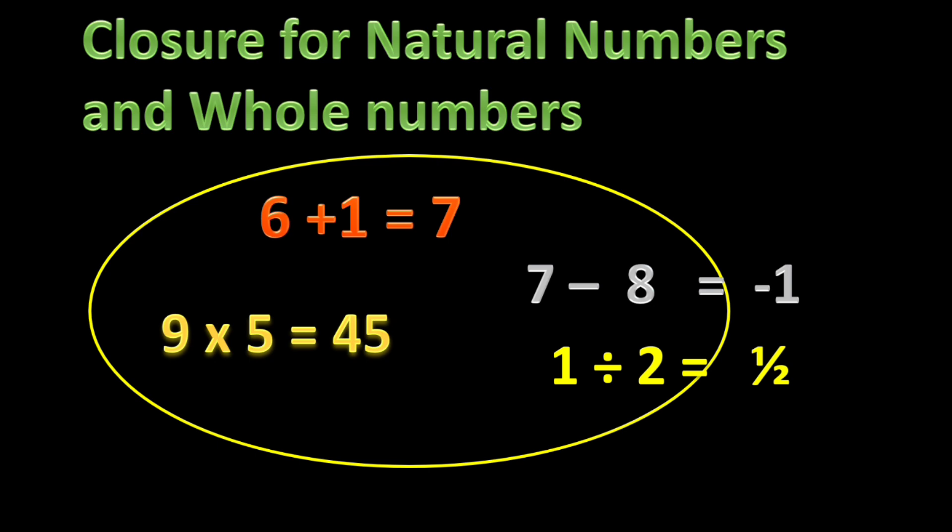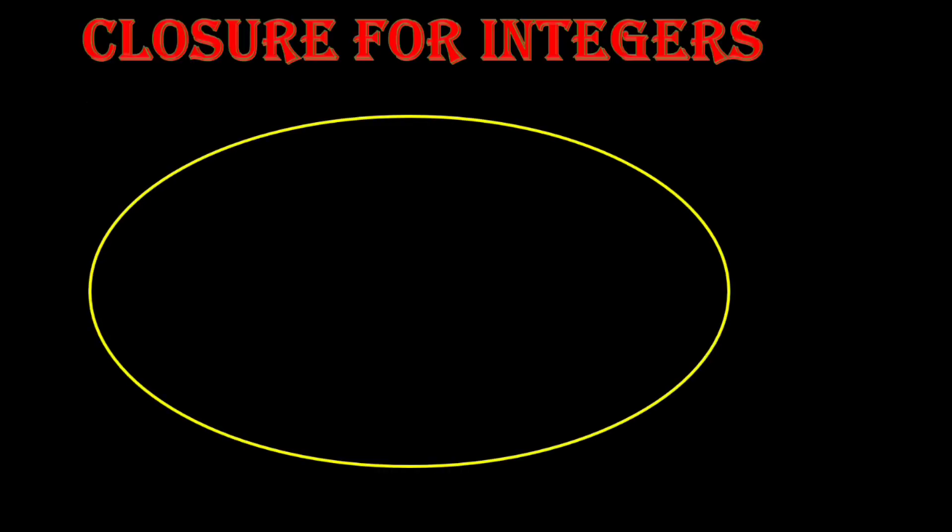For division: here 1 divided by 2 — 1 and 2 are whole numbers, but when we divide these two whole numbers, we do not always get a whole number as the quotient. Here one-half is the quotient, and one-half does not belong to the same set of numbers. So division is not closed for natural numbers and whole numbers.